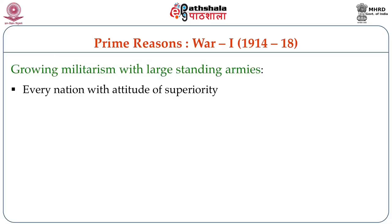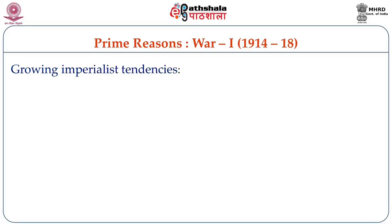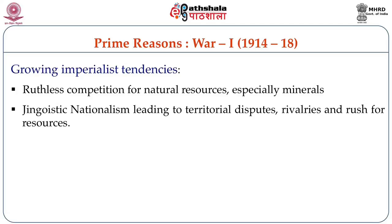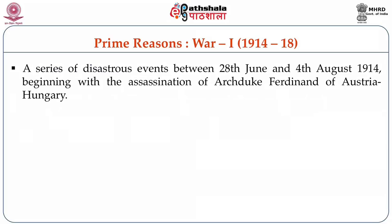Every nation was highly egoistic and feeling superior to all other countries around. Growing imperialistic tendencies were conspicuous, stretching into ruthless competition for natural resources, especially minerals. Jingoistic nationalism leading to territorial disputes, rivalries and rush for resources was also a causative factor. A series of disastrous events between 28th June and 4th August 1914, beginning with the assassination of Archduke Ferdinand of Austria-Hungary, should create awareness about the events that were to take place subsequently.